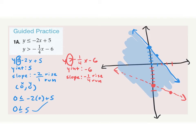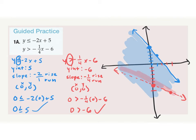Now we test where to shade. We plug in (0, 0): 0 > −¼(0) − 6, so 0 > −6. Is this true? Yes. So we shade above this line. We only care about the purple overlapping part, so we erase the blue and red portions.